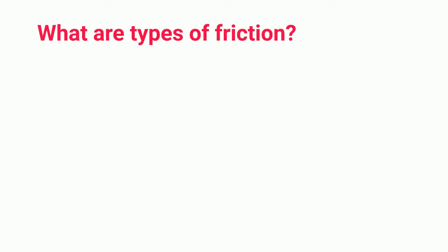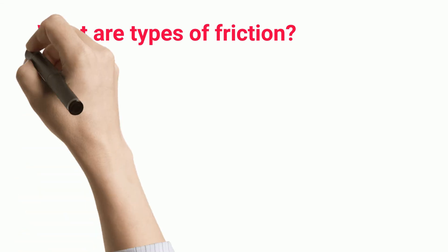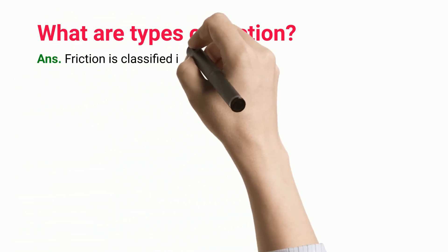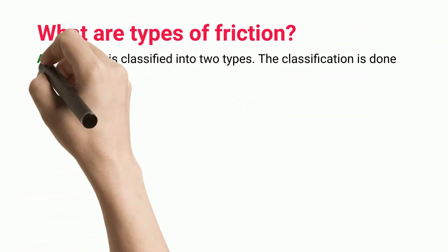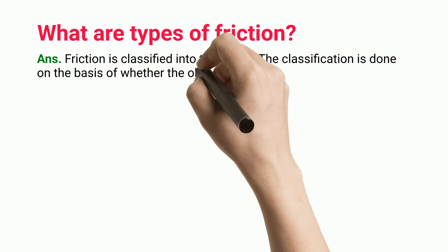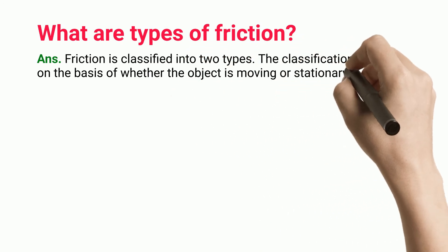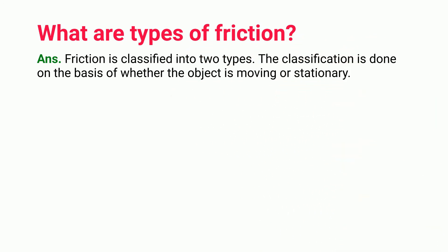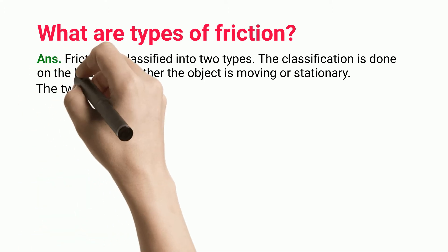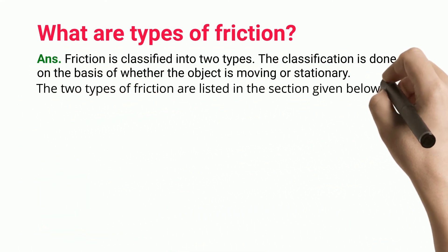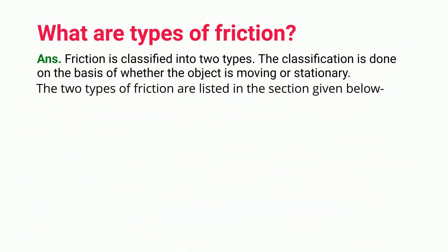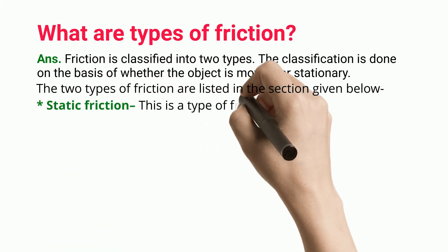Friction is classified into two types. The classification is done on the basis of whether the object is moving or stationary. The two types of friction are static friction and kinetic friction.